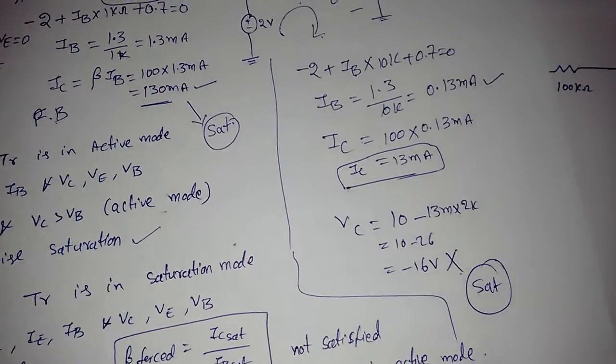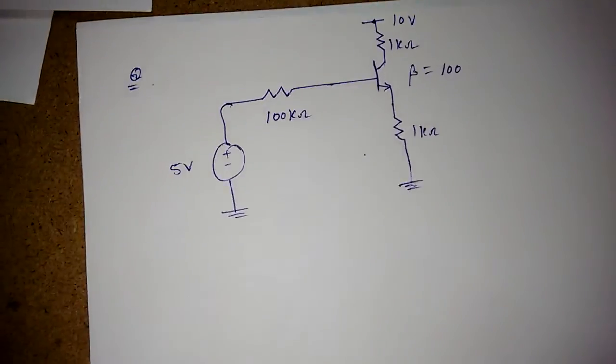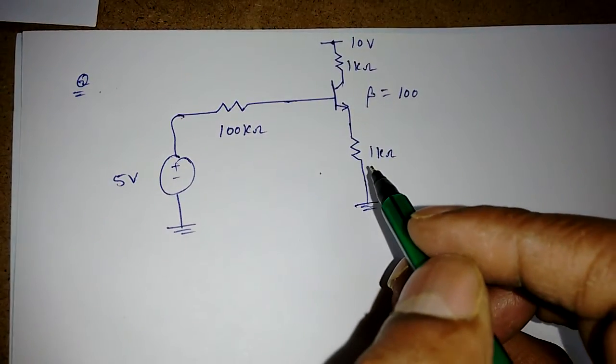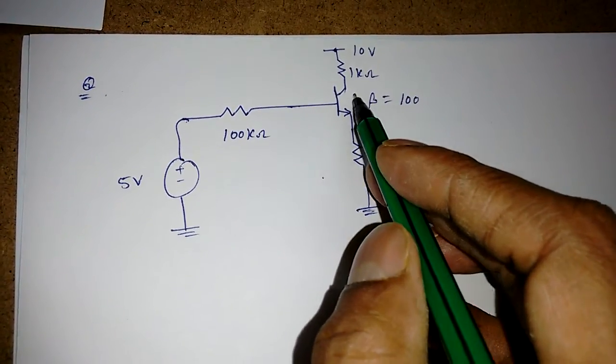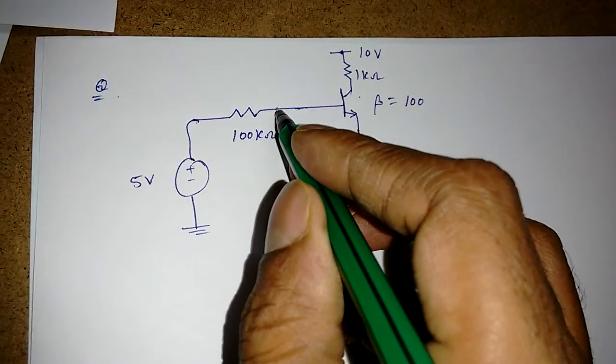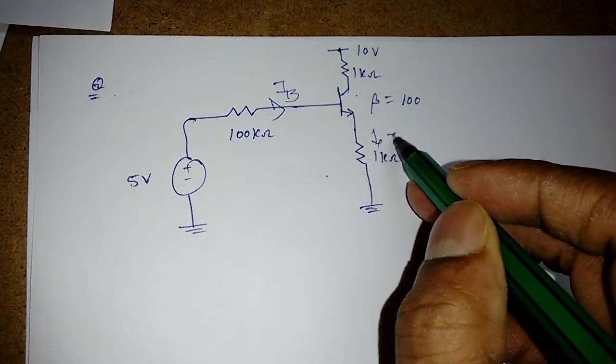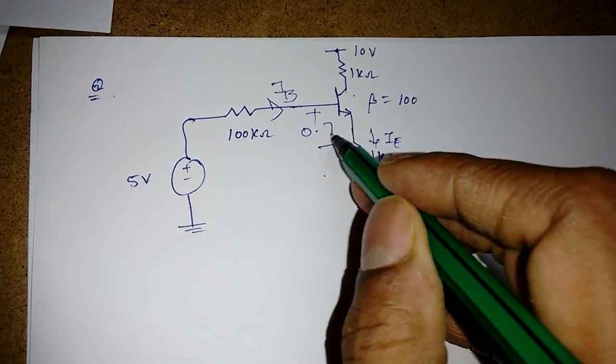This is how to find the modes of operation. Now taking one more circuit: this is increased to 100kΩ, one resistance is added at the emitter, and this is reduced to 1kΩ. Again, we are assuming the transistor is in active region.